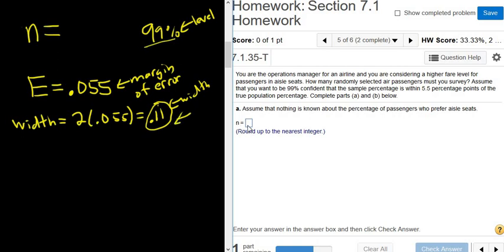And if you look here, you see the n equals. That's also a pretty good giveaway. Assume that nothing is known about the percentage of passengers. That means we're going to leave the target proportion alone in this problem. In part B, it's probably going to give us a number that will become the target proportion. Let's go ahead and do it.